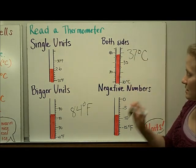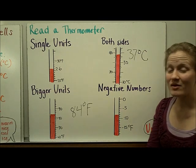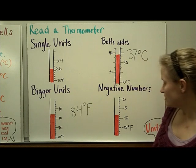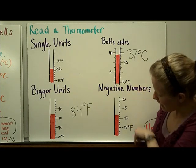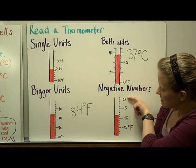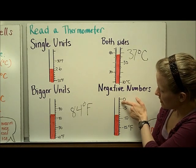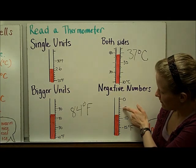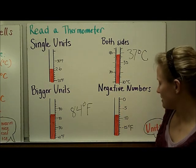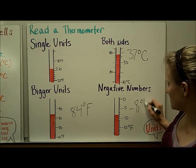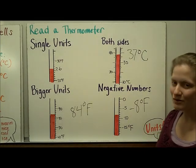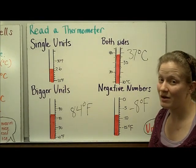And then be aware that there are temperatures that are negative numbers, really cold temperatures, and so you're going to have to count backwards down the thermometer in order to get the right measurement. So 0, negative 1, negative 2, negative 3, negative 4, negative 5, negative 6, negative 7, negative 8. So this temperature is negative 8 degrees Fahrenheit. And be sure whenever you read a thermometer that you check the units and make sure that you use the right one, Fahrenheit or Celsius.